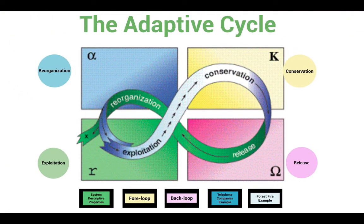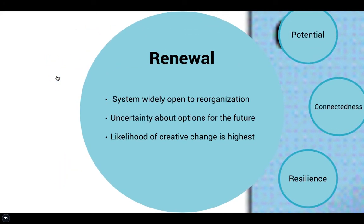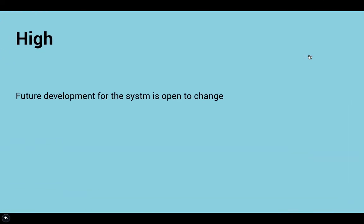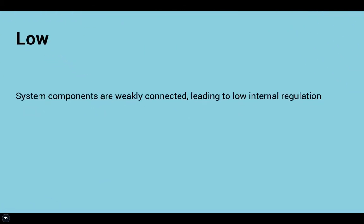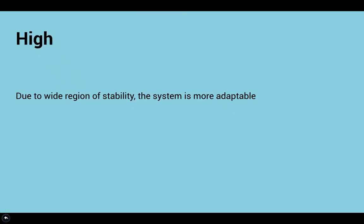After the collapse of the system comes the reorganization or alpha phase, also seen as the renewal phase. Because of the uncertainty about future possibilities, the system is open to reorganization, and the likelihood of creative change is highest at this phase. The potential for the alpha phase is high — the future outlook is flexible and not yet concrete. Since the system is once again being reformed and reorganized, the connectedness is once again low. However, the resilience for the system is once again high, as the wide region of stability makes it easy for the system to adapt to any external disturbances.